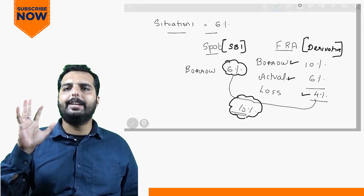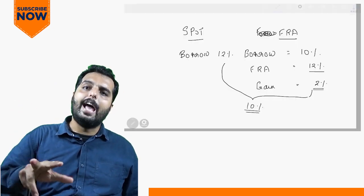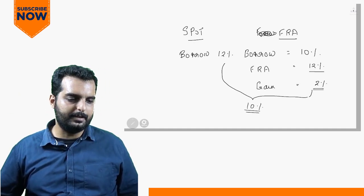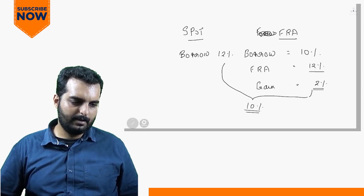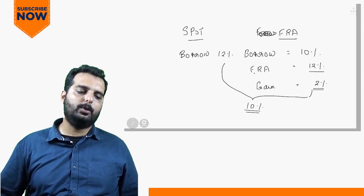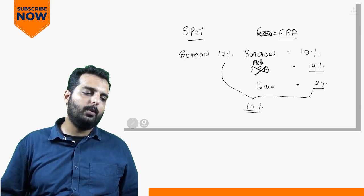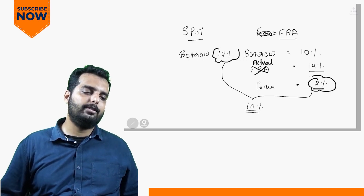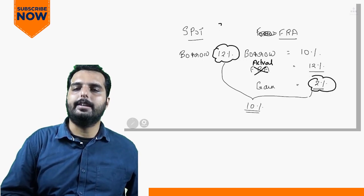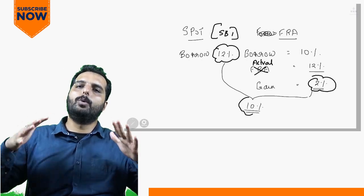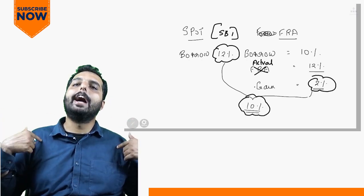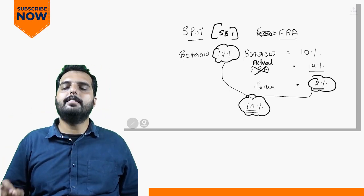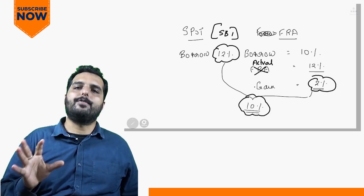In the second practical scenario, I borrow at 10% in the FRA market and the actual rate turns out to be 12%, so I make a gain of 2% in the FRA market. In the real spot bank (SBI), I borrow at 12%. So I end up paying 10% overall. Whichever way the interest rate moves, I will end up paying only 10% and can sleep peacefully.